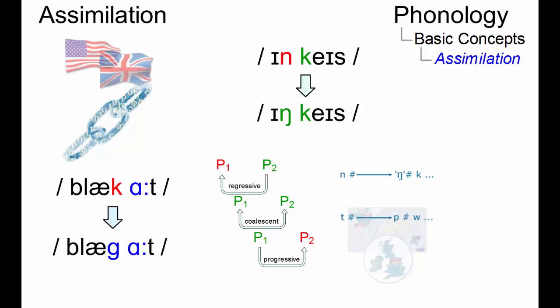Assimilation is defined as a connected speech phenomenon where adjacent phonemes influence each other so that they become alike. There are two articulatory types.